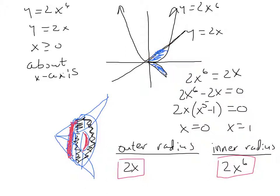It's pretty easy to find those points. All we need to do is set those two functions equal to each other. We can subtract 2x from both sides and wind up with 2x to the sixth minus 2x equals zero. Factor out a 2x and we'll have x to the fifth minus one equals zero. Now we find the two zeros: x equals zero and x equals one.